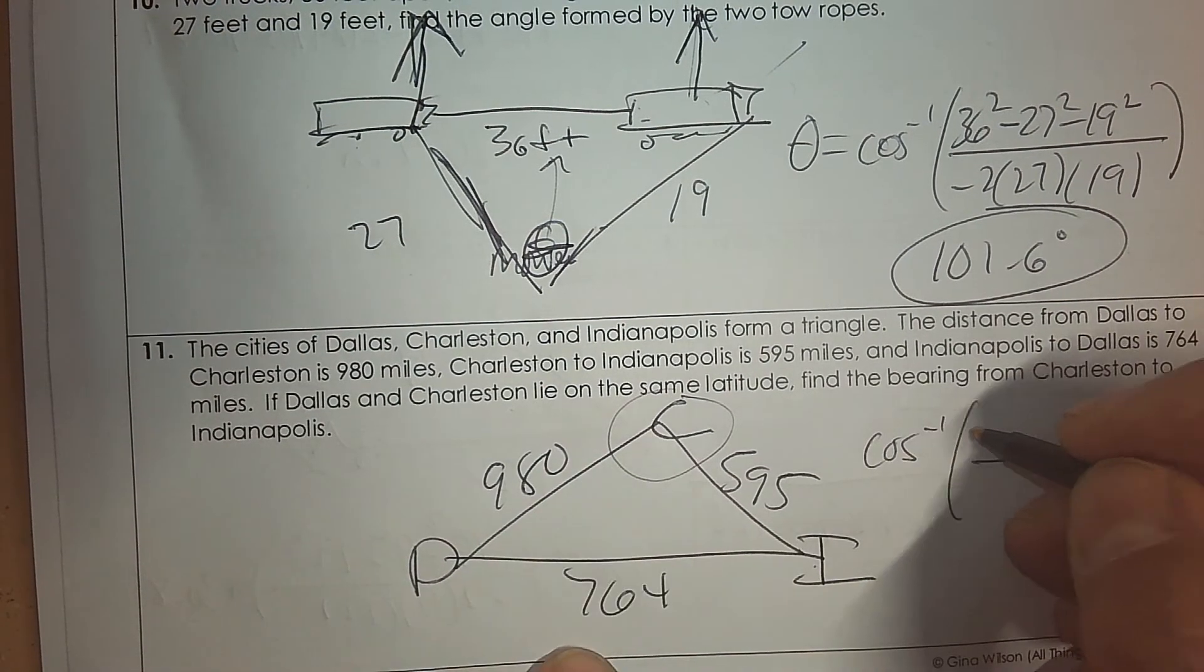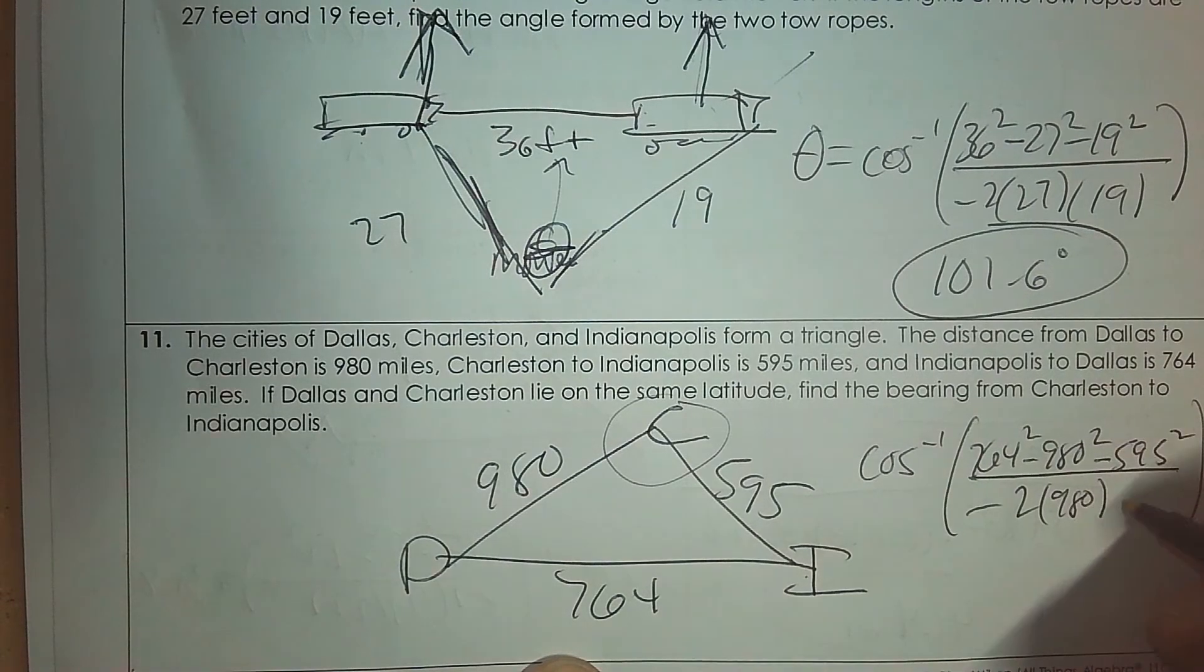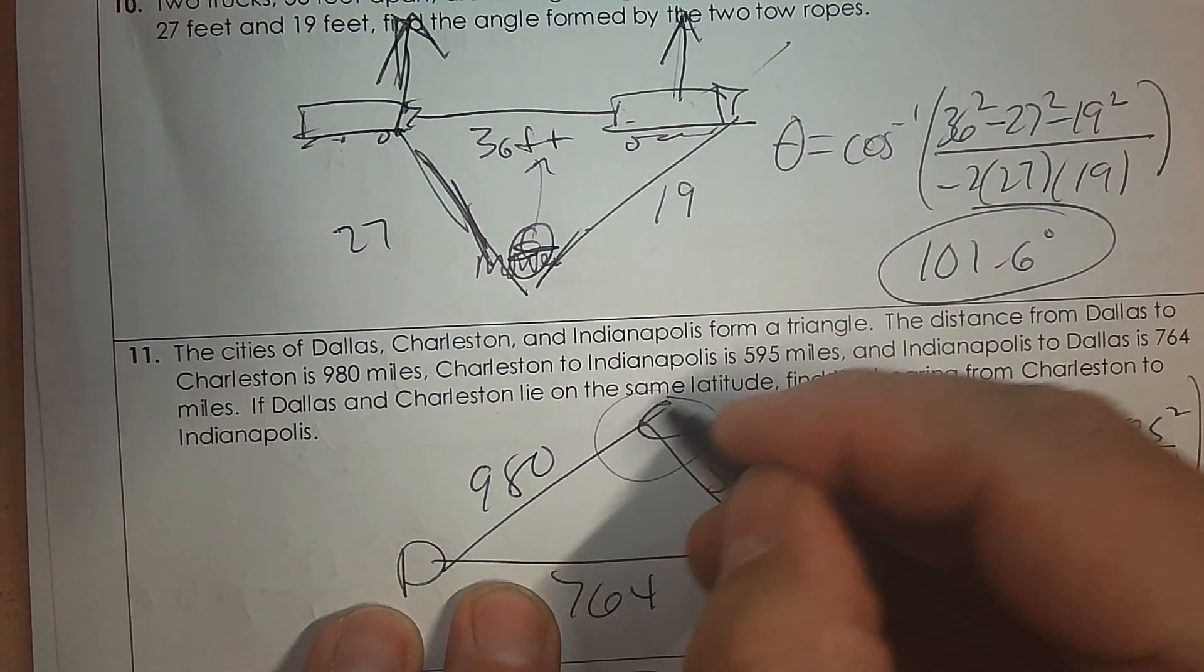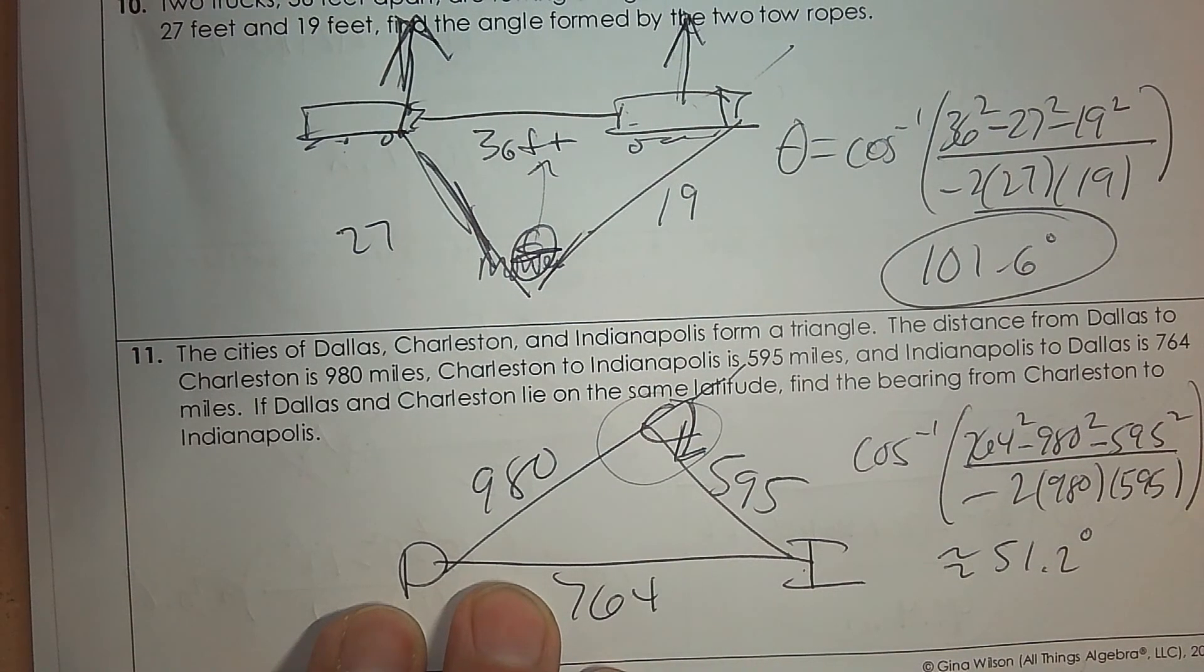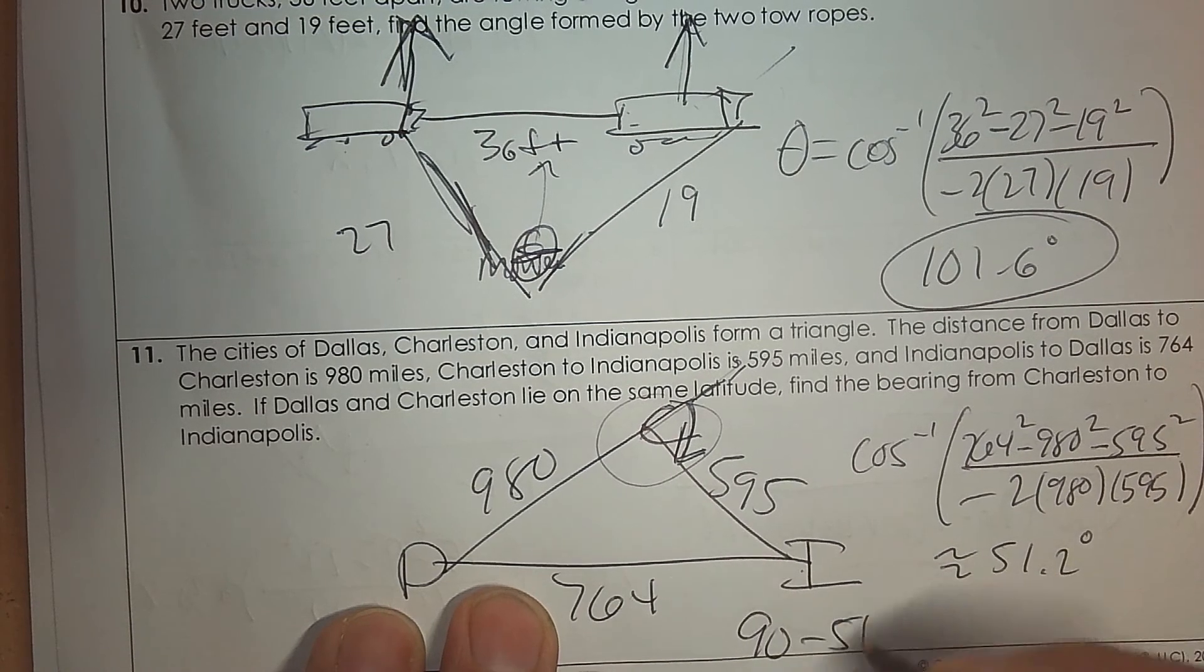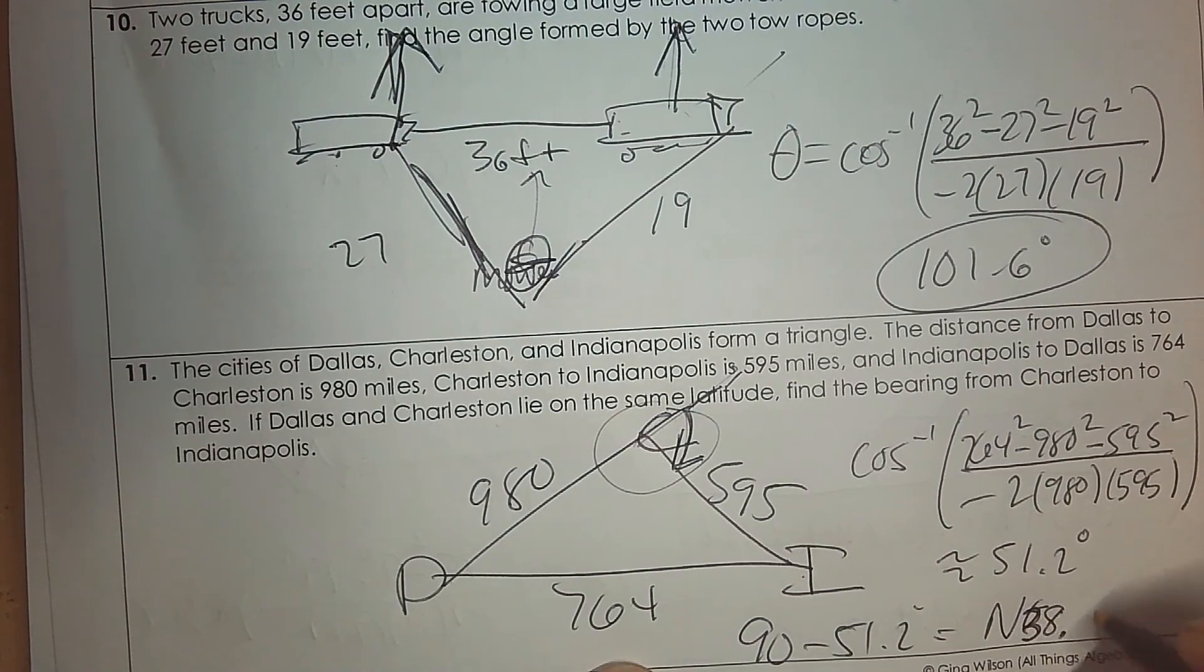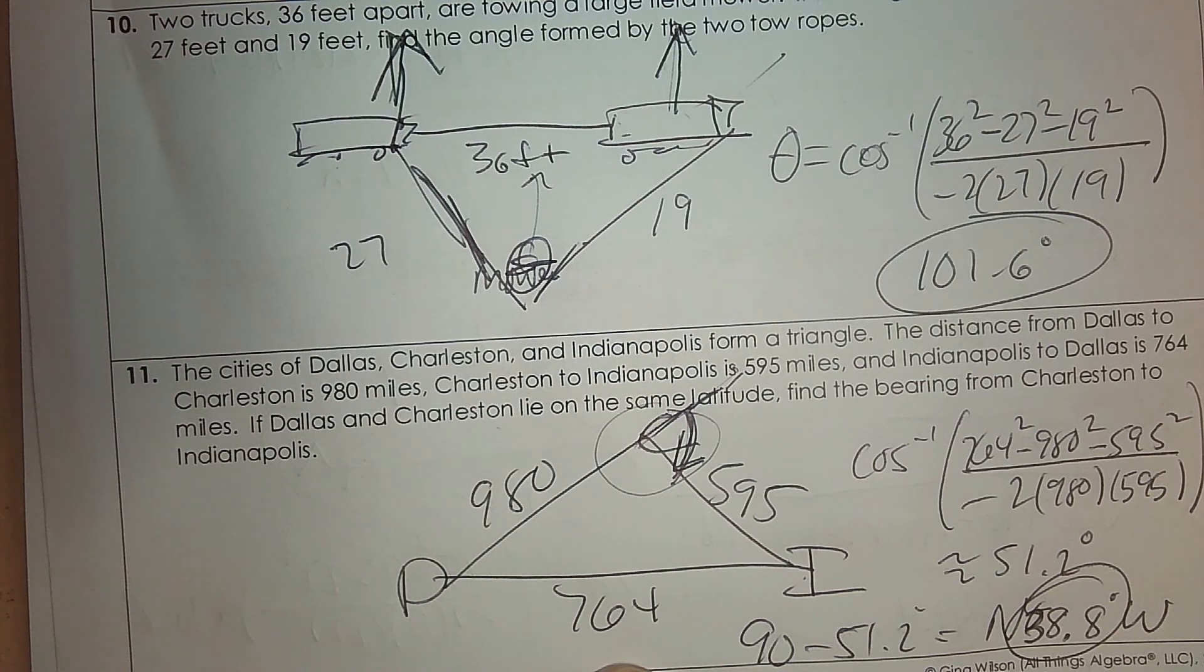So that's going to be 764 squared minus 980 squared minus 595 squared. And then find that angle. And that angle is about 51.2 degrees. Now, the bearing part is from Charleston to Indianapolis. That's actually the angle outside the triangle. So if you think of the angle outside the triangle, it's both north and west. So north and west in terms of that. But anyways, the bearing is going to be 90 subtract 51.2. So it's north. And it's 38.8 degrees west in terms of the direction. North and west in terms of it. But really, 38.8 and see it as a way outside the triangle.